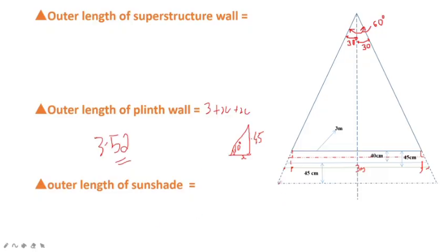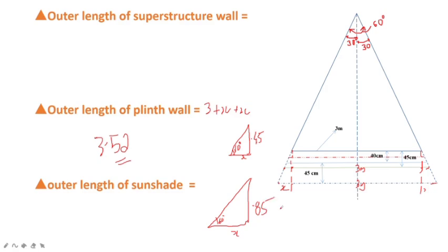The last one is the outer length of the sunshade, following the same procedure. We extend the line with the base of 3 meters and add x distance on each side using the triangle with angle pin of 60 degrees. The height changes to 0.85 m, so x is 0.85 divided by tan 60. The outer length of the sunshade is 3 plus x plus x, which gives 3.98 m. So we have: outer sunshade 3.98 m and outer superstructure wall 3.46 m.